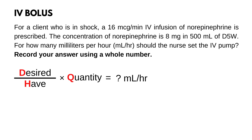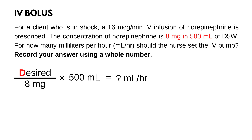Now that the formula is organized, we are going to plug in the numbers. Start with half and quantity — for this problem it is 8 mg in 500 mL of D5W. For desired, you will plug in the doctor's order: 16 mcg per minute.